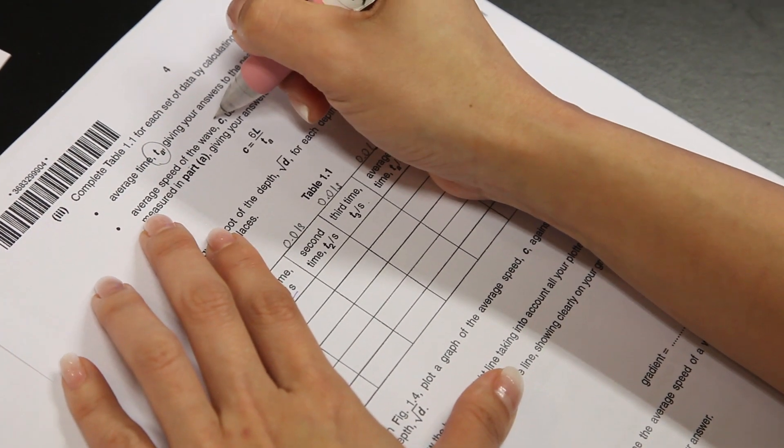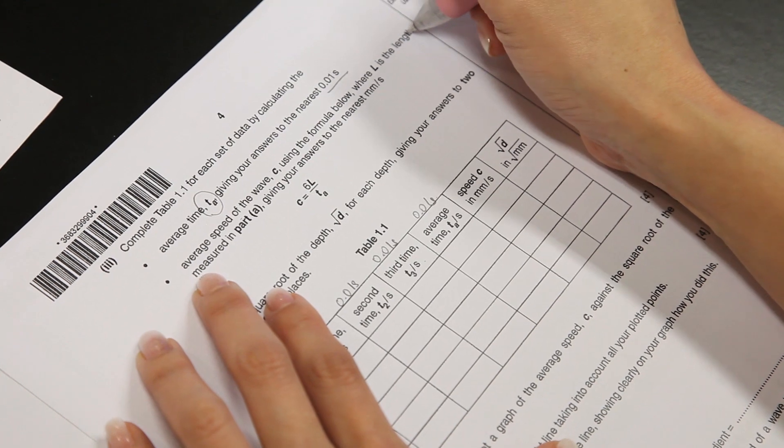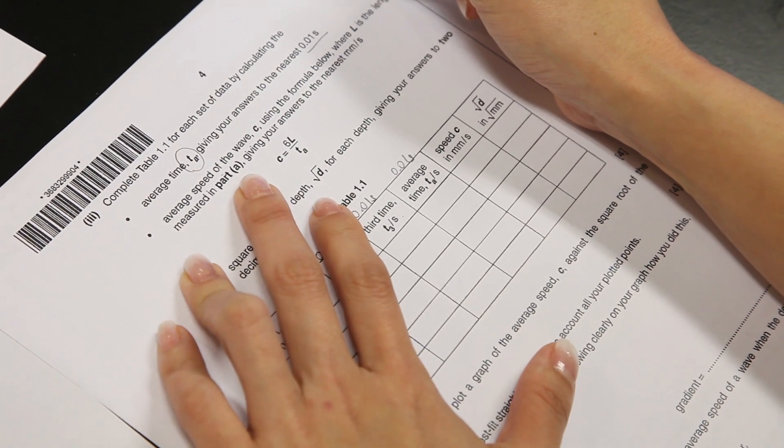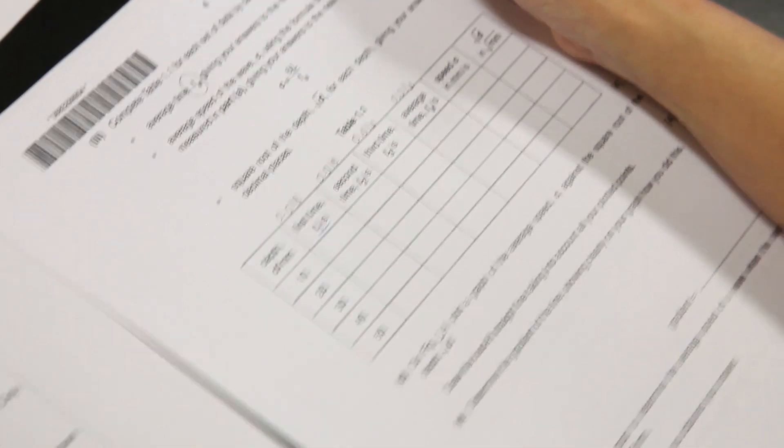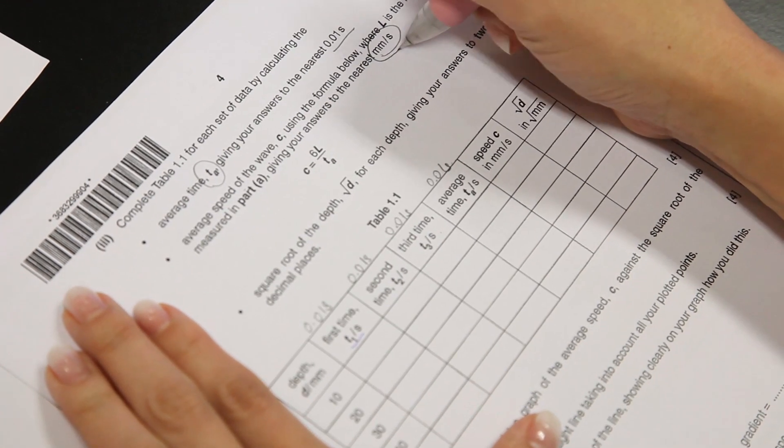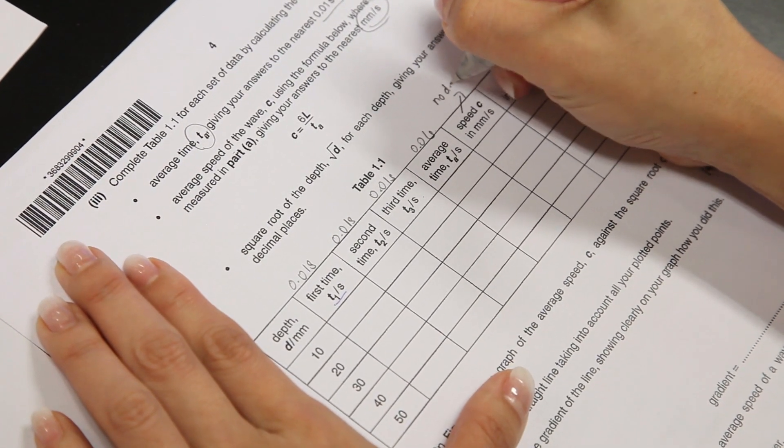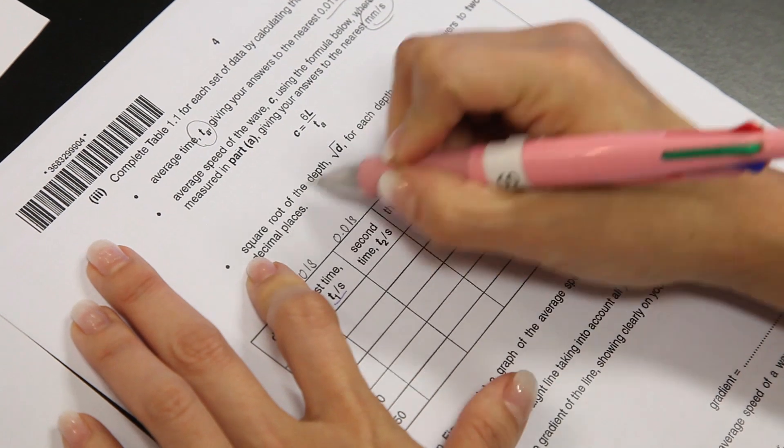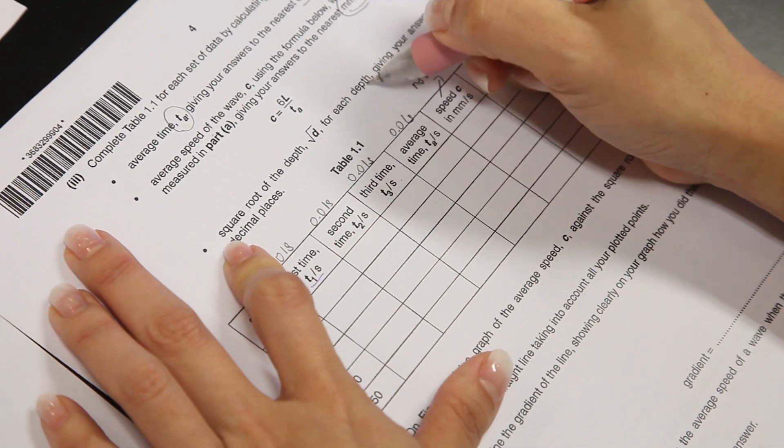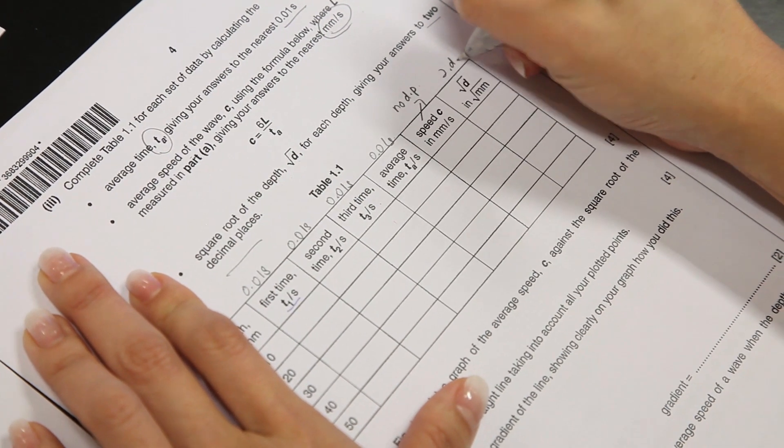Average speed of the wave C, using the formula below where L is the length measured in part A, which is this. Giving your answer to the nearest 0.01 seconds. So for this answer here, there should be no decimal place. Square root of the depth, square root D for each depth here, giving your answer to 2 decimal place. The next step is 2 DP.